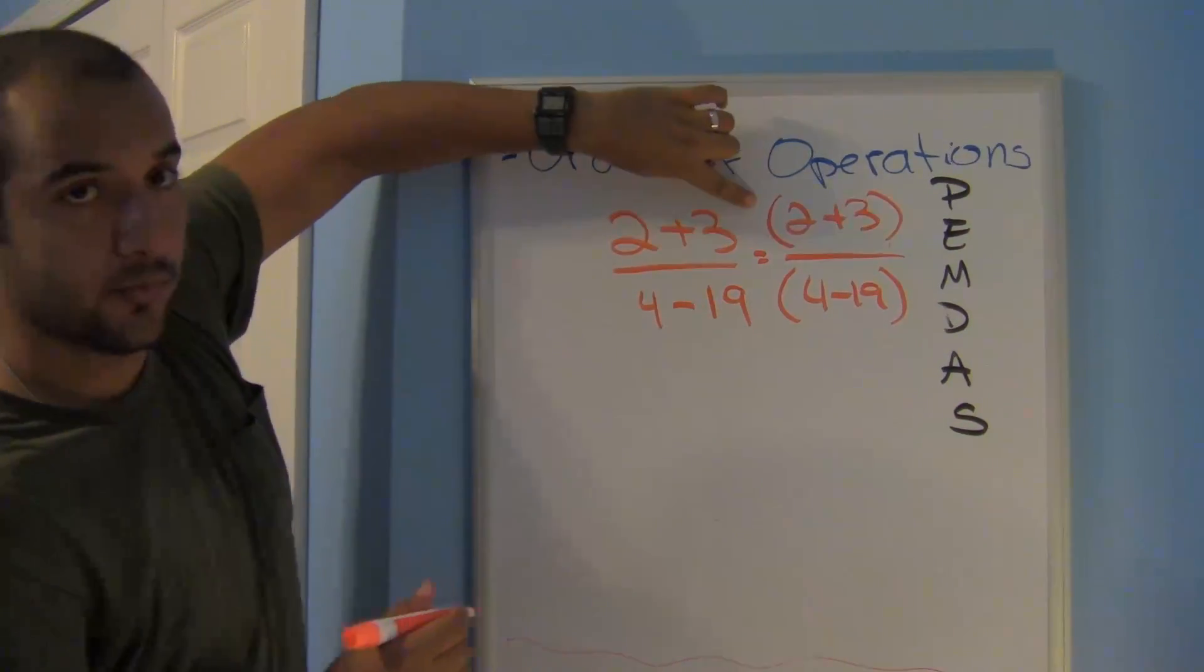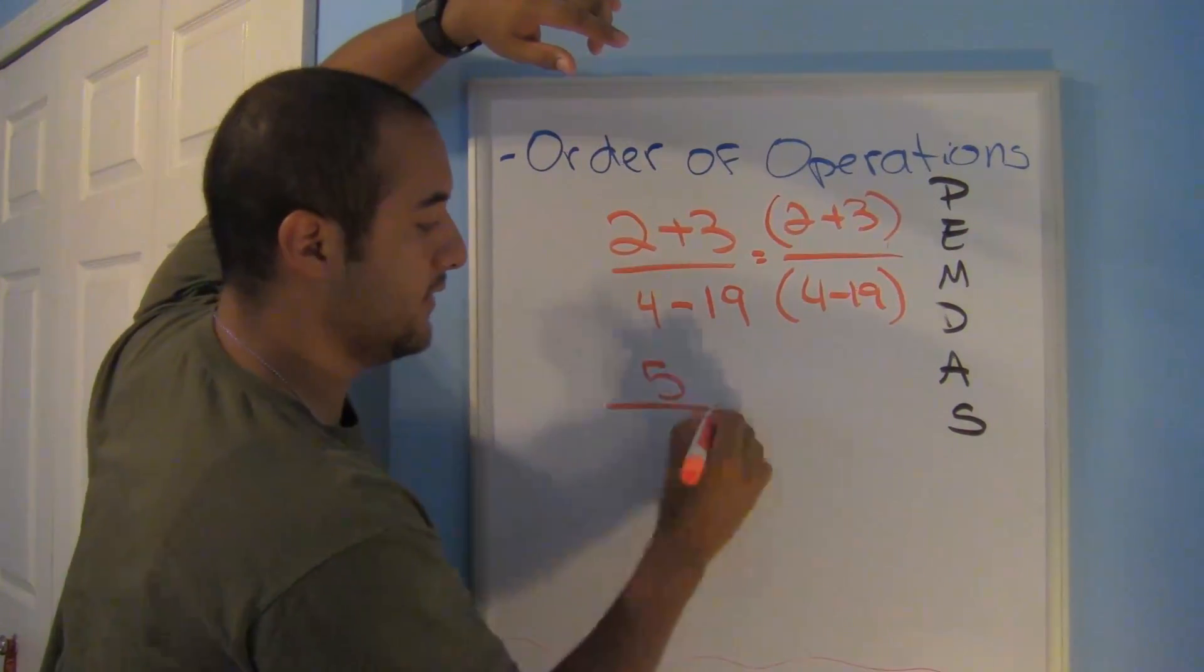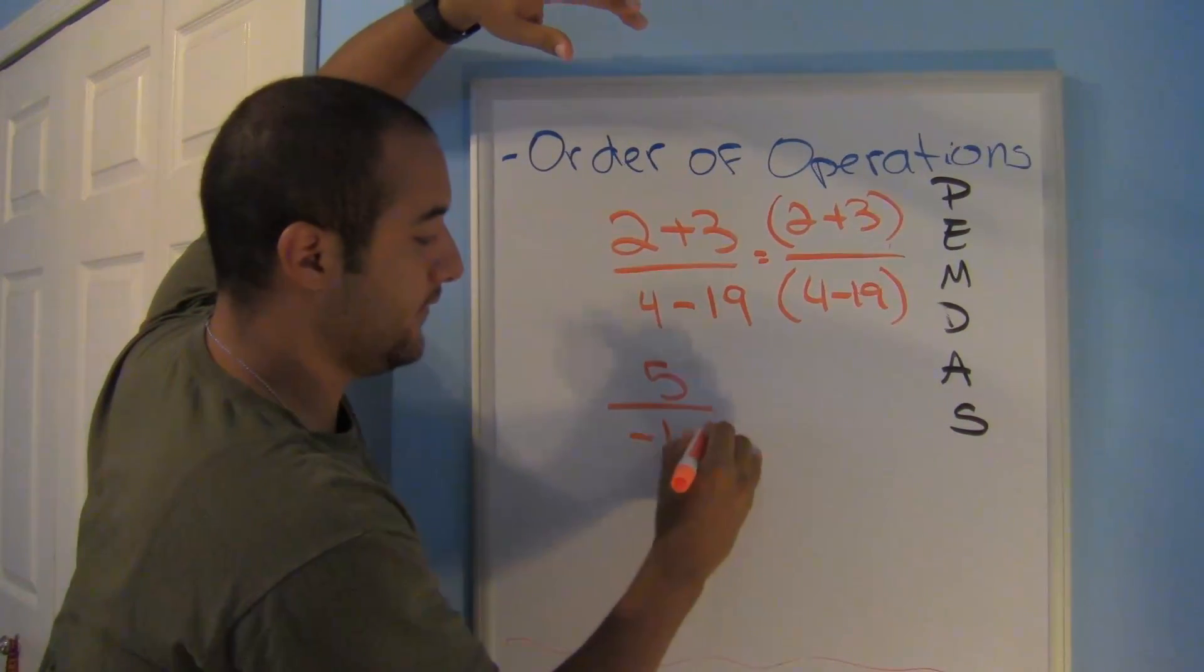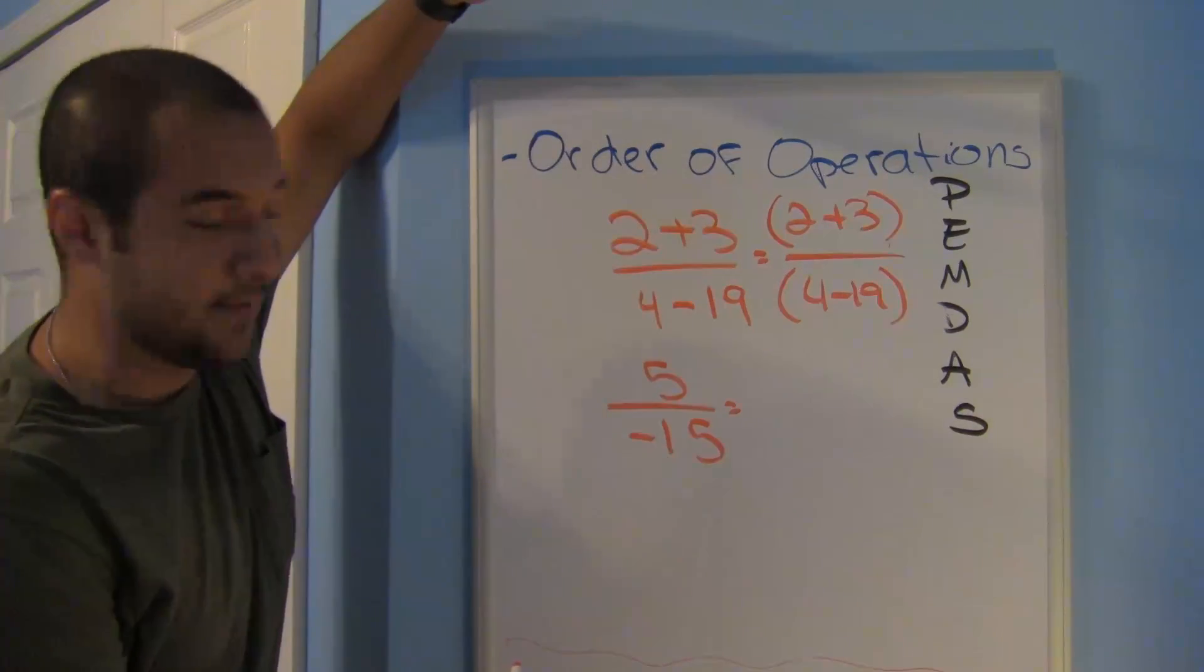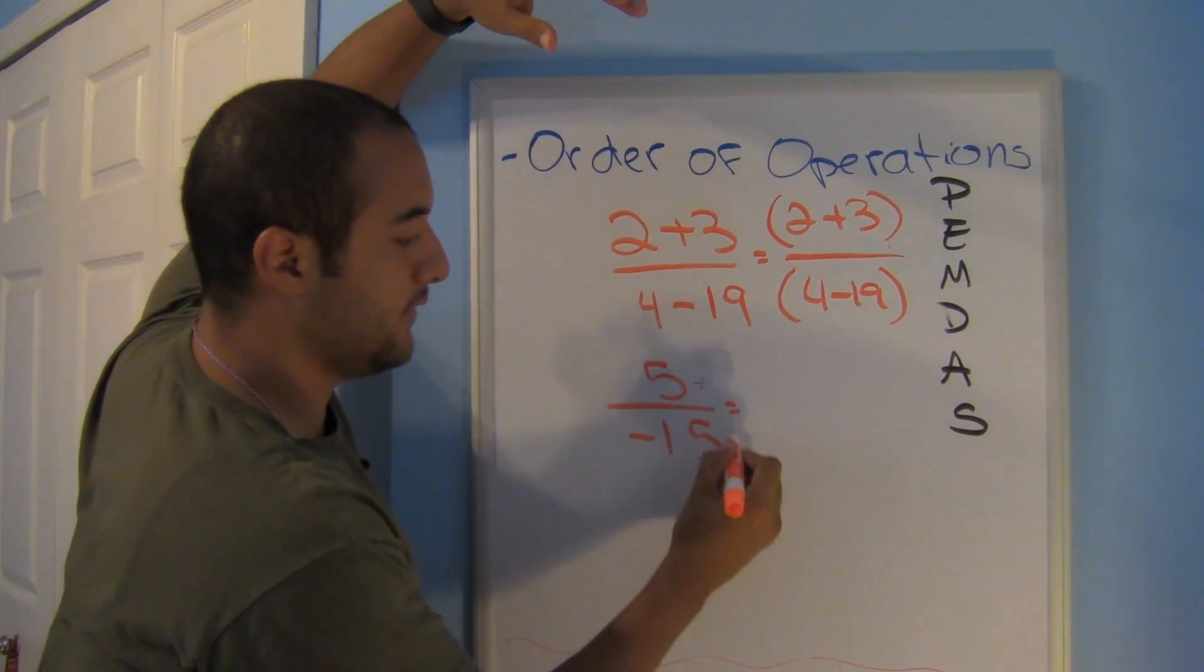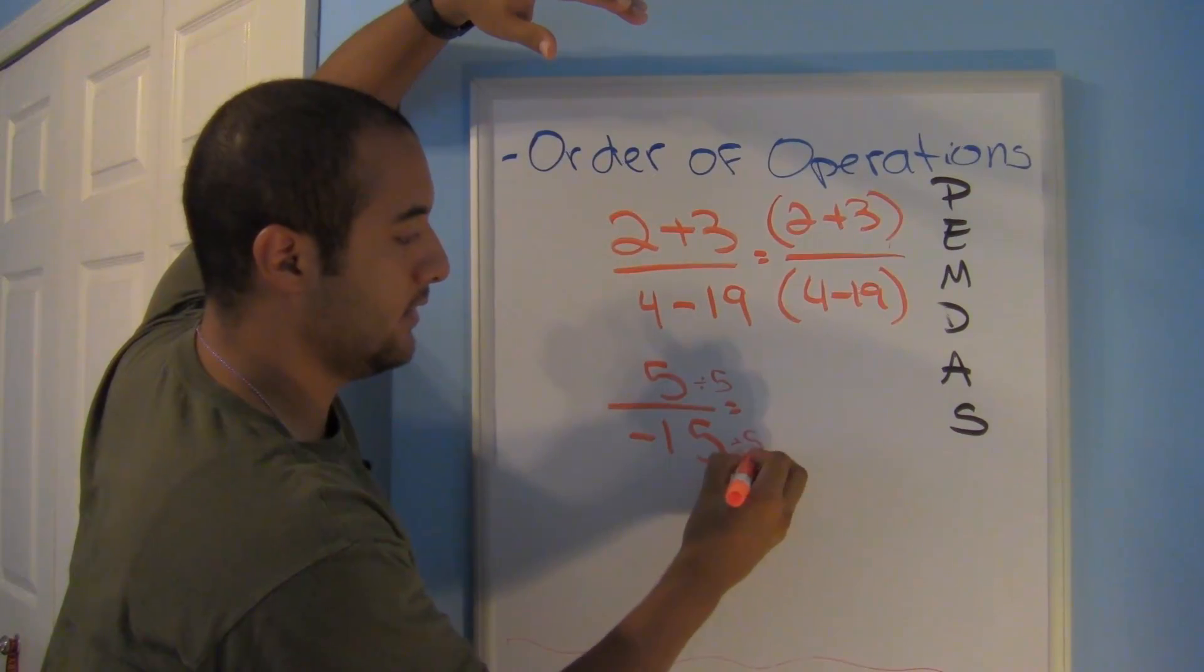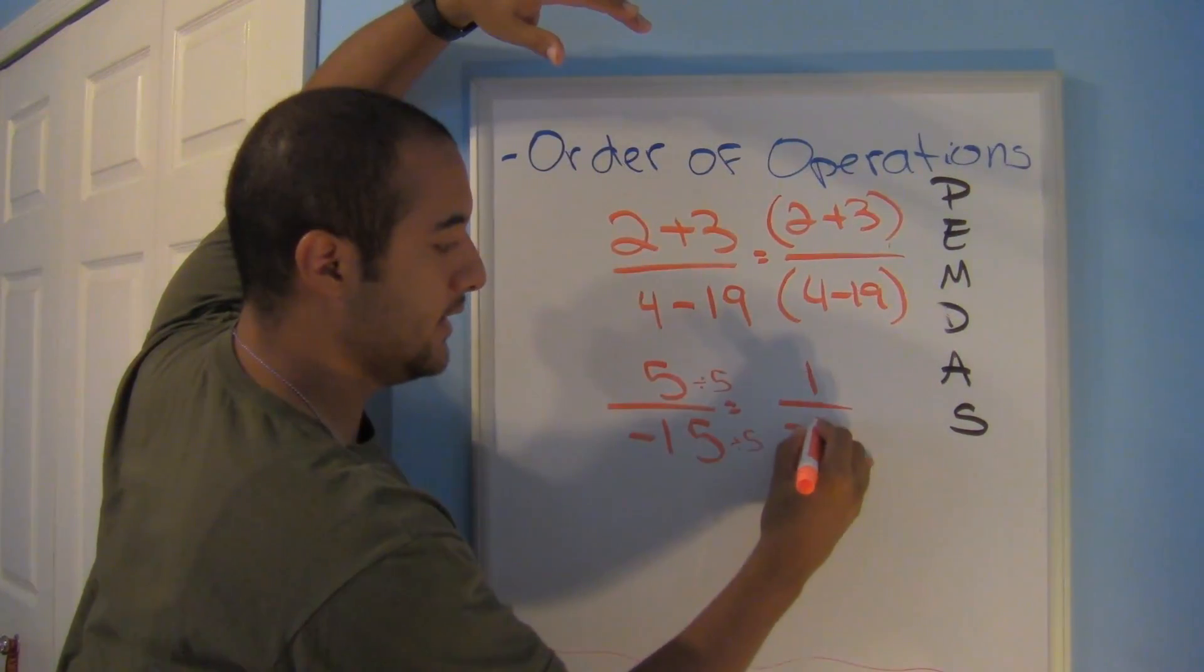So we're going to do our numerator first. 2 plus 3 is 5 over 4 minus 19 is negative 15. That can be simplified. So I'm going to go ahead and simplify it. Divide by 5.